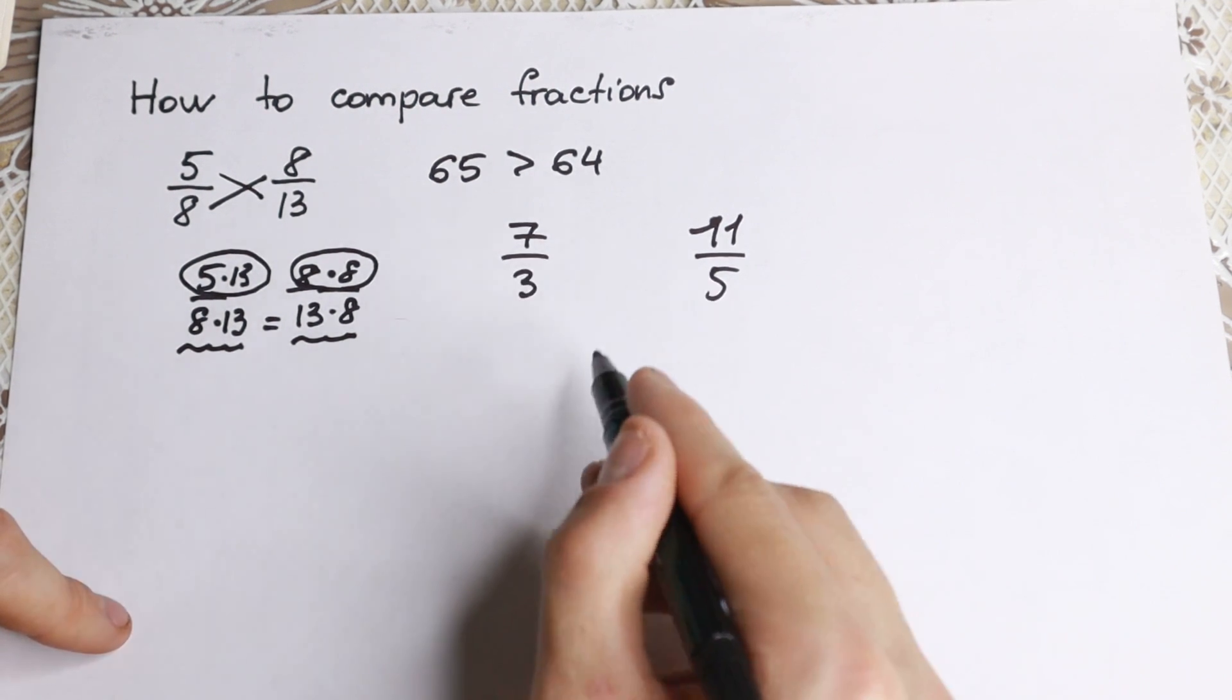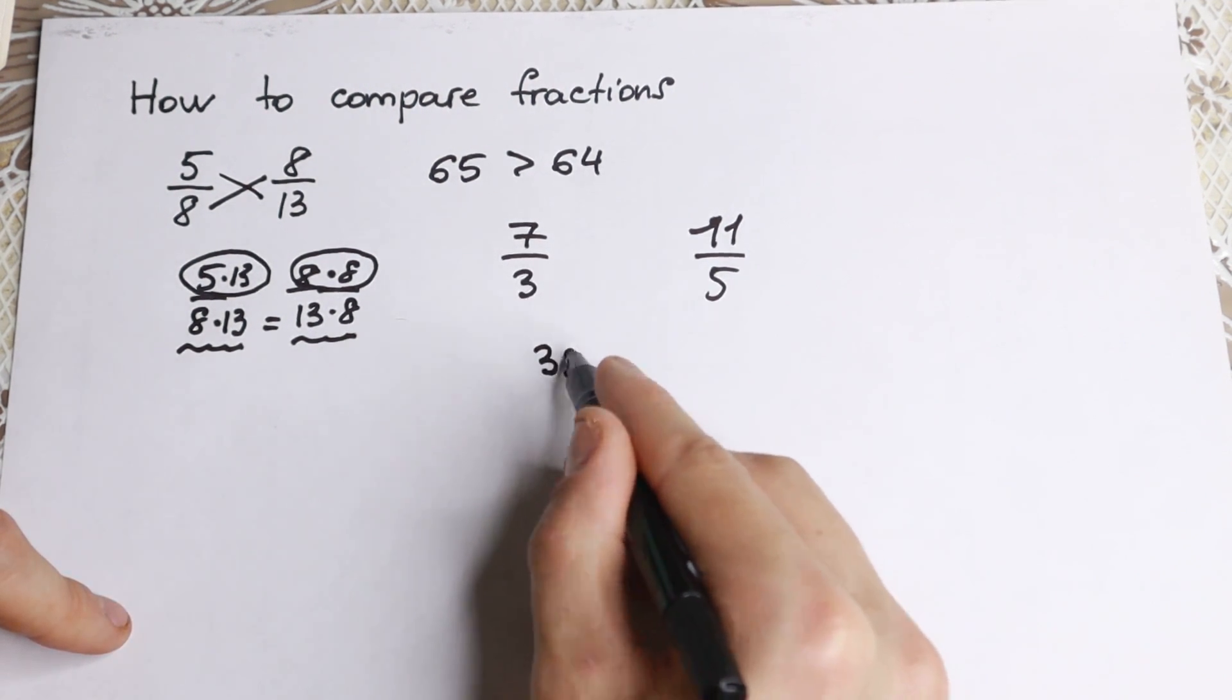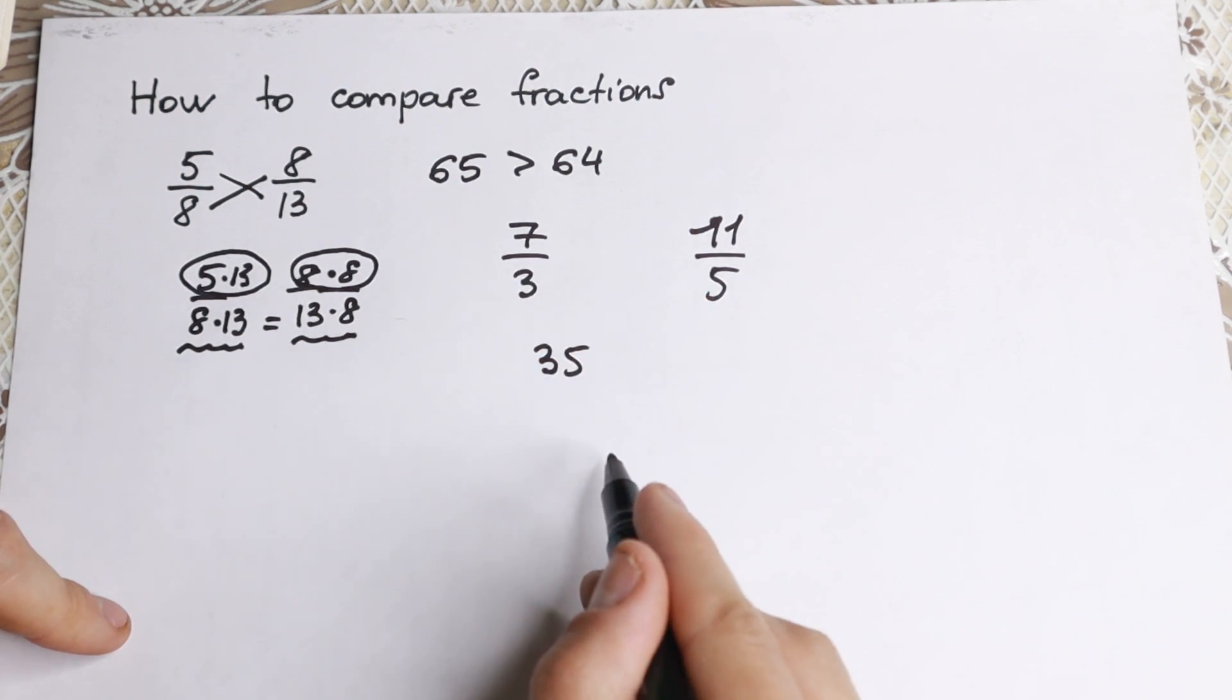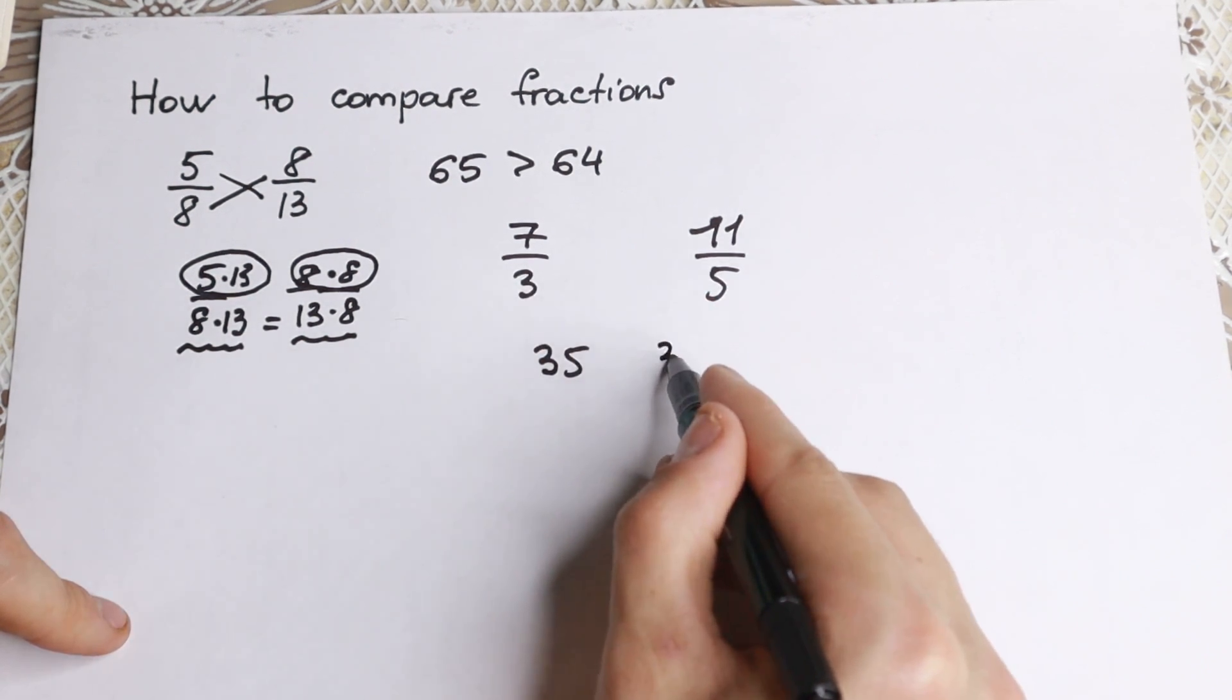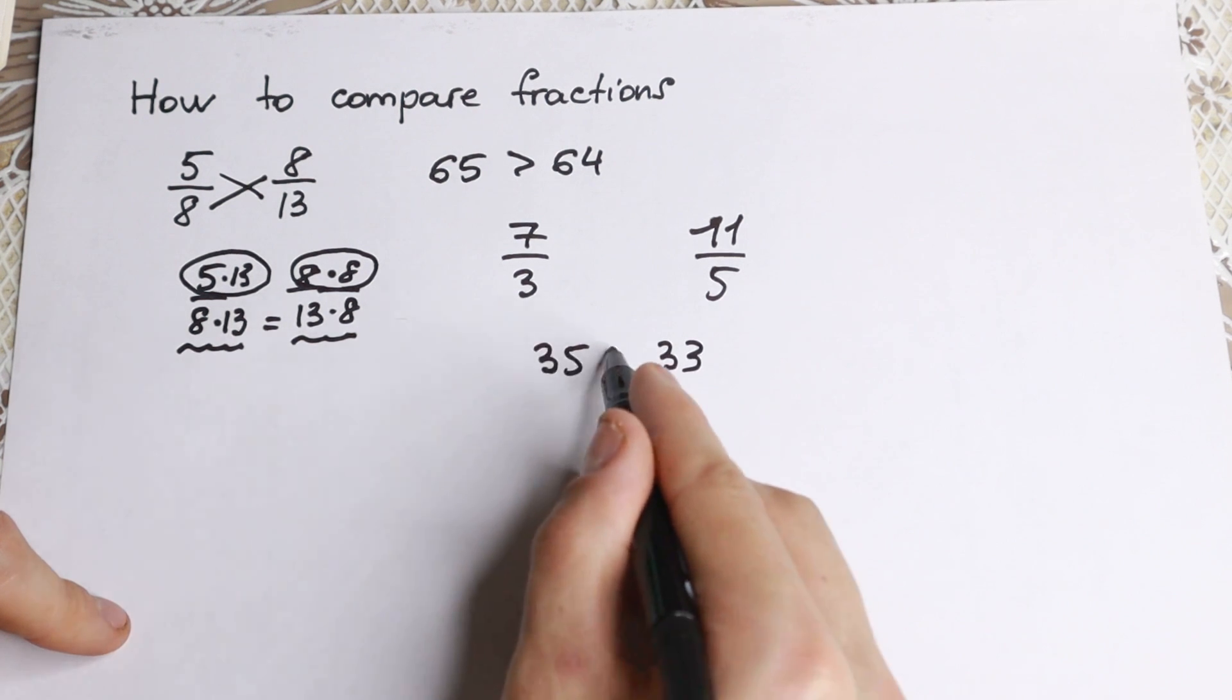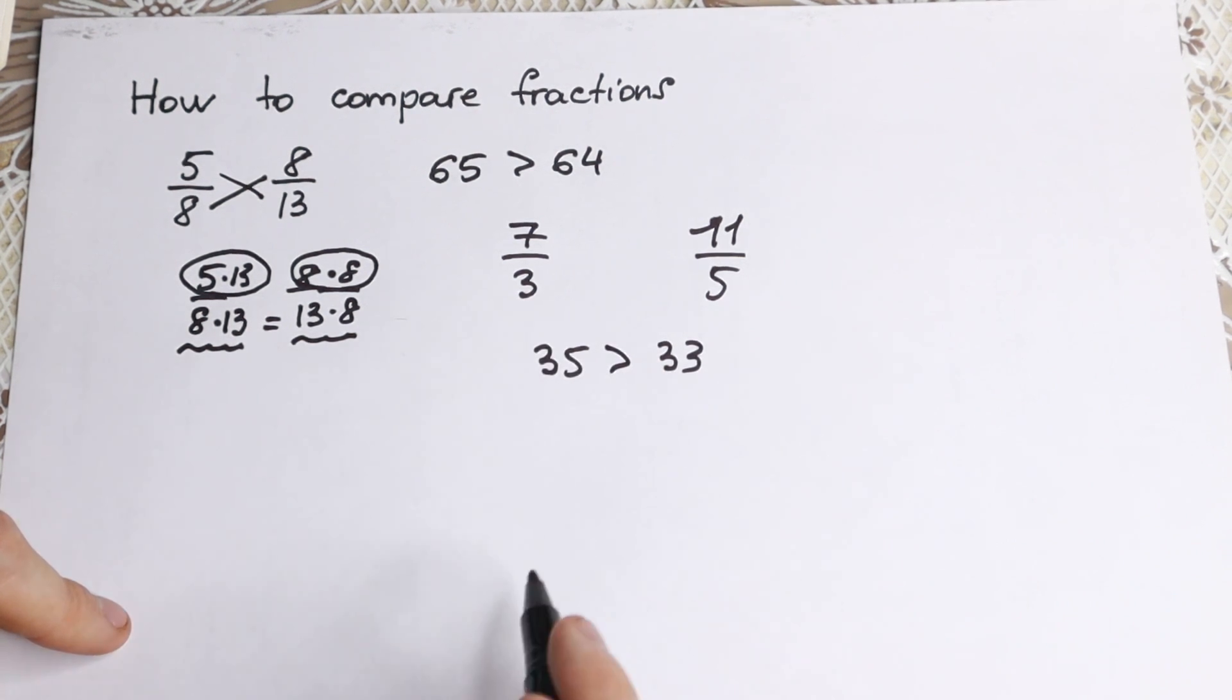We have 5 times 7 equals 35, and we have 3 times 11 equals 33. So the left-hand side is greater.